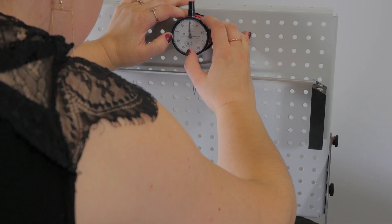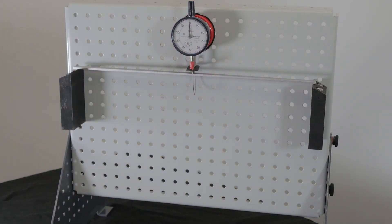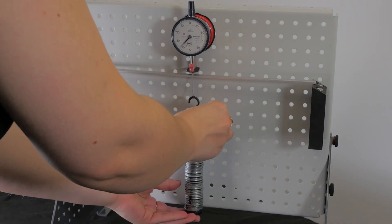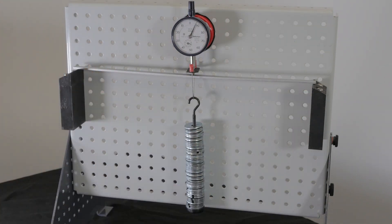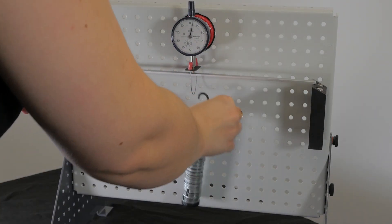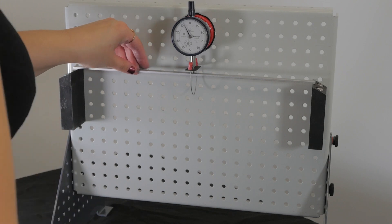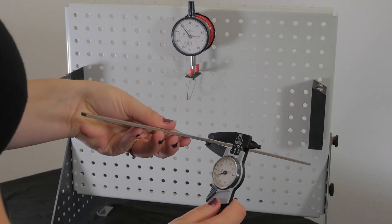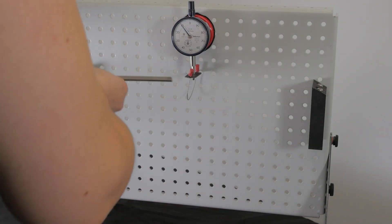Set and zero the dial indicator, then add the weight hanger with 49 weights or 500 grams. Tap the work panel to reduce the effect of friction and repeat this with the brass and steel beams and perform the necessary calculations.